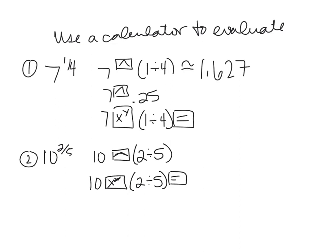So 10 to the parentheses 2 divided by 5, close the parenthesis. And I get, and I have to equal, because when I close the parenthesis, it does 2 divided by 5 for me. 2.512 approximately.